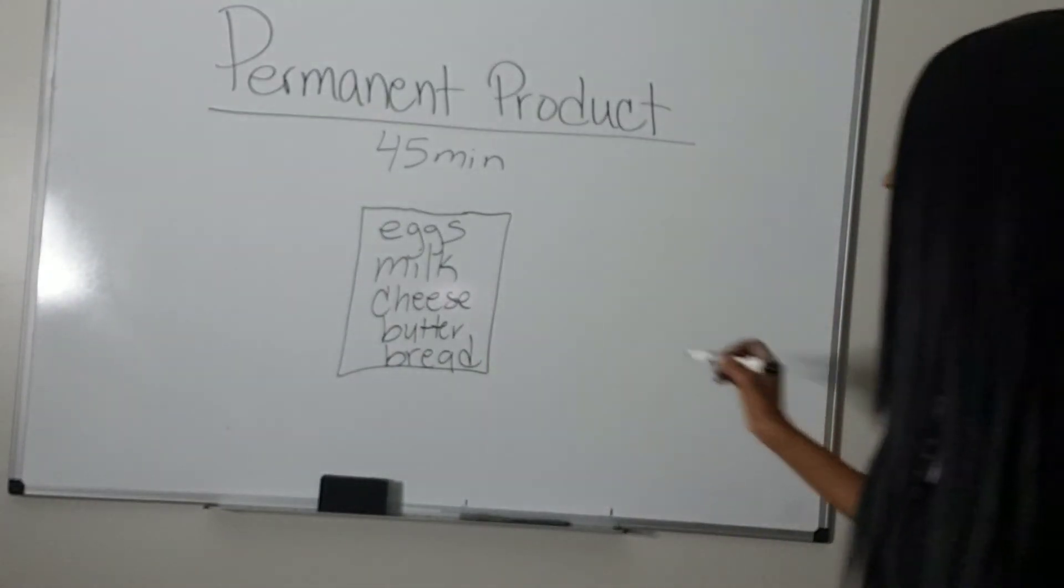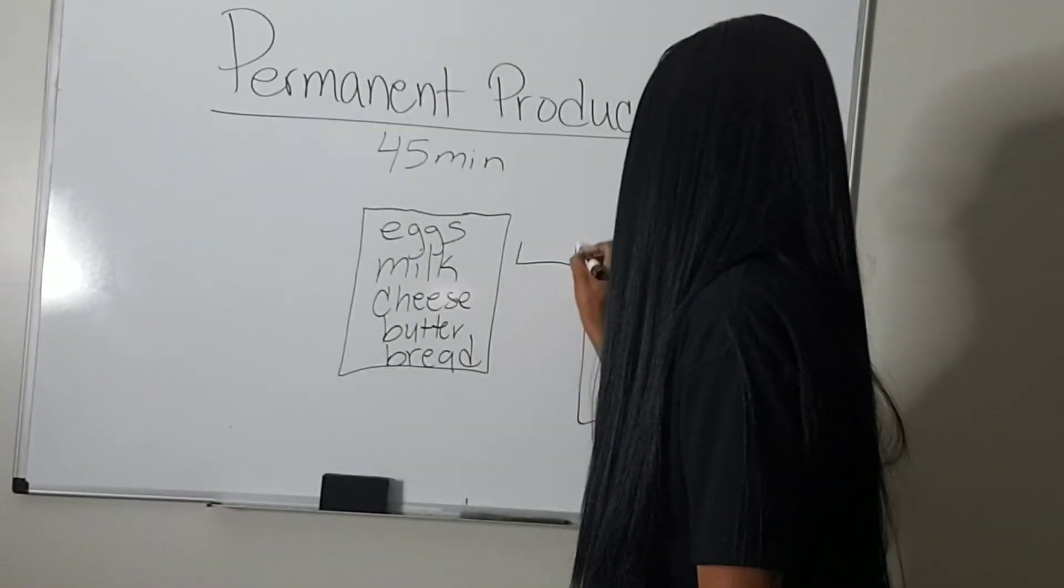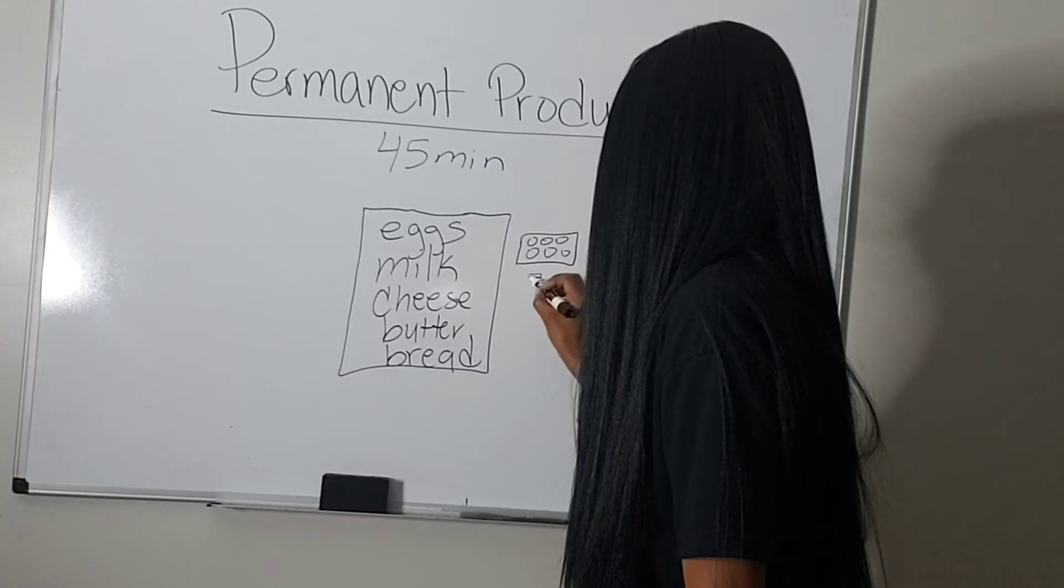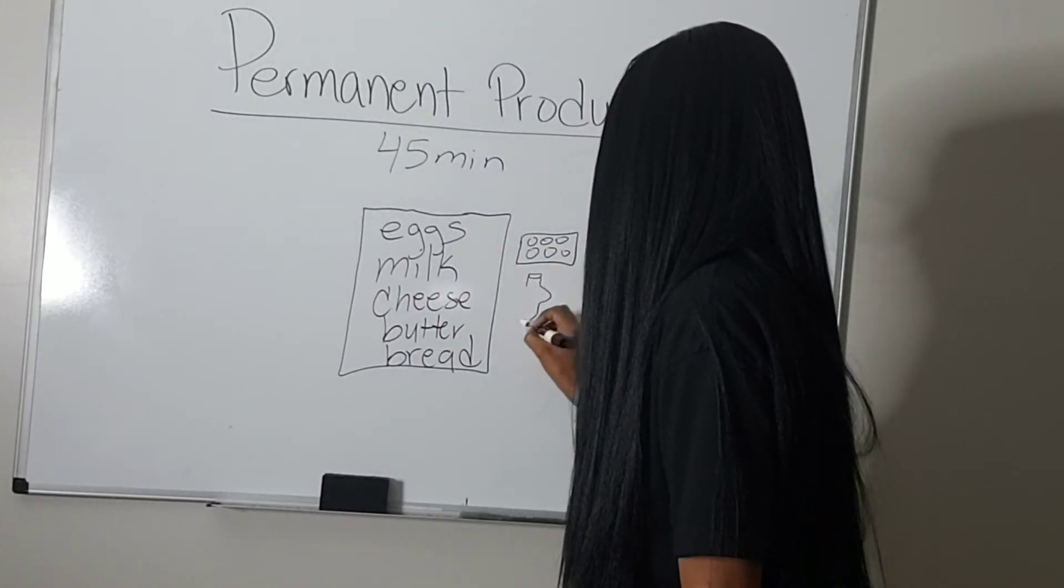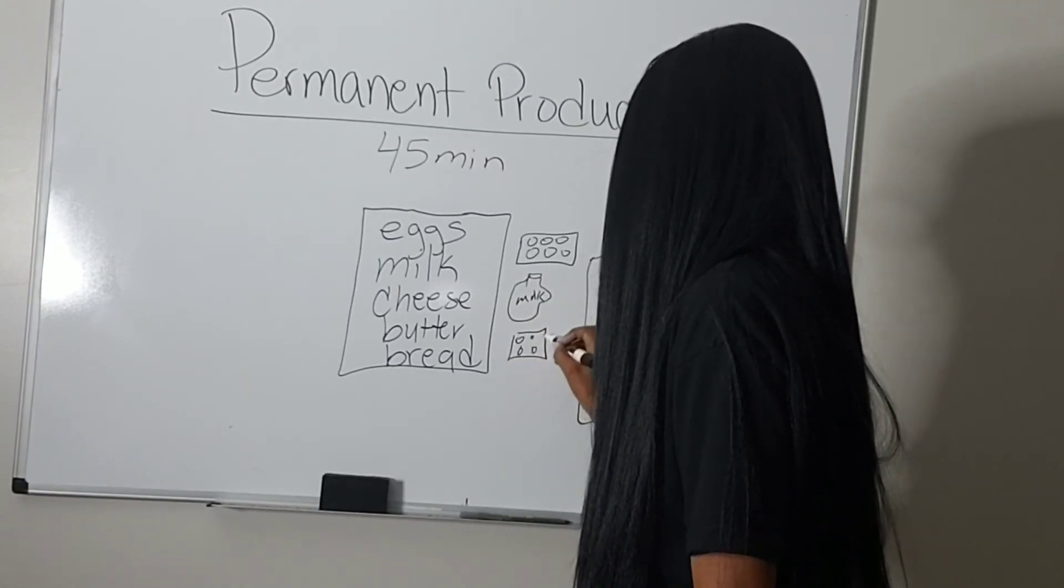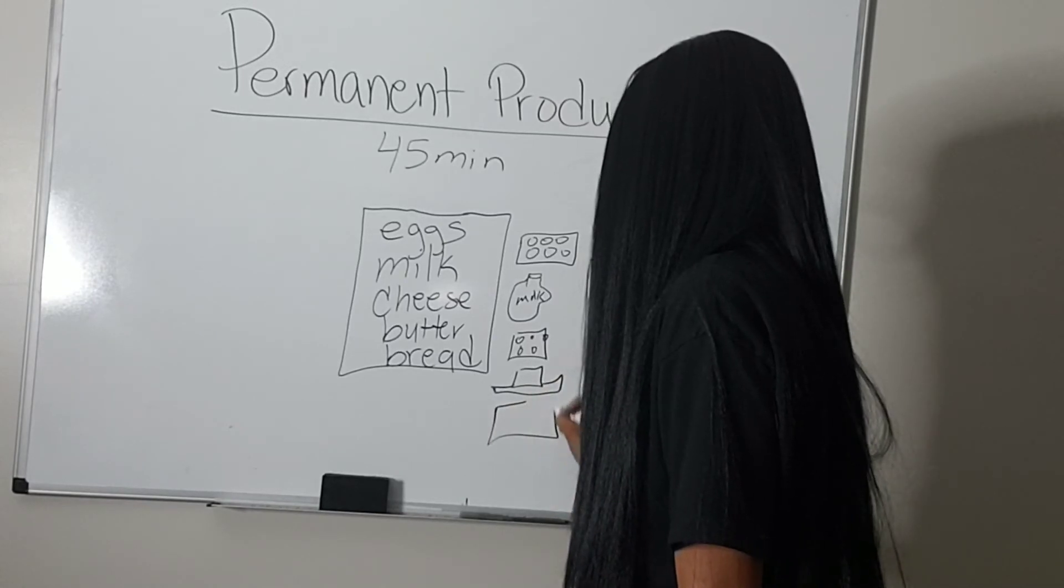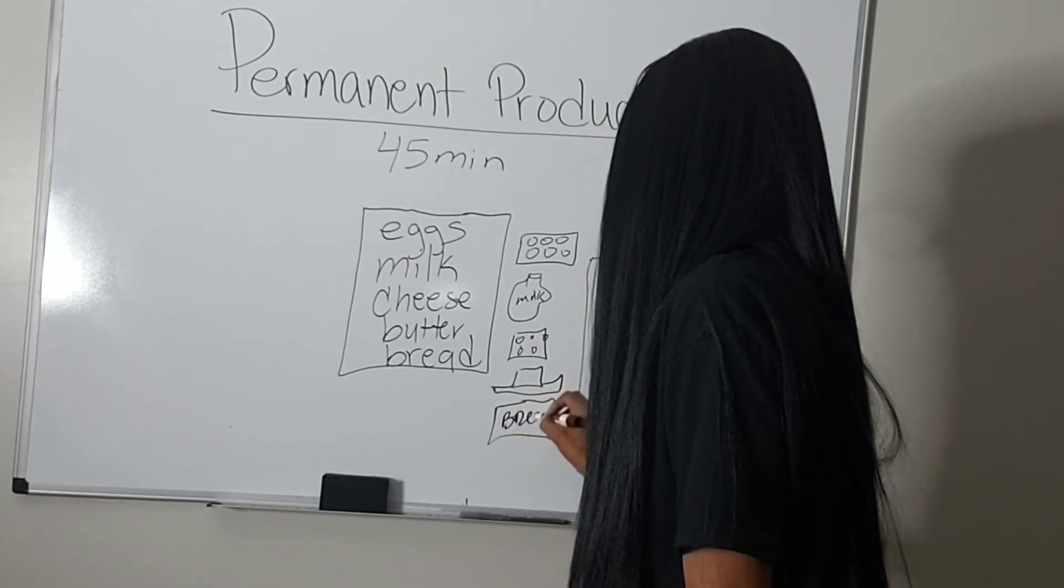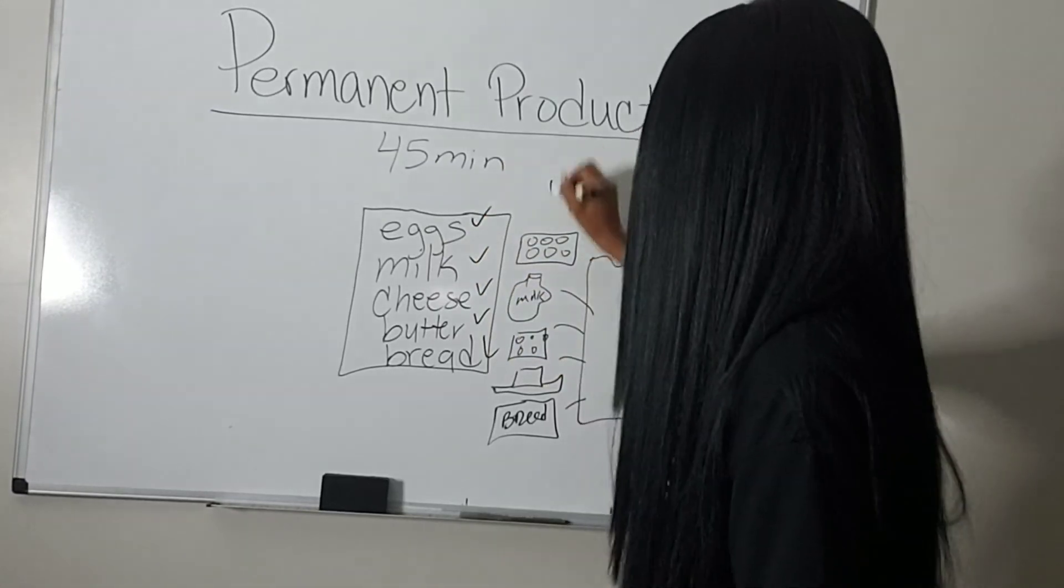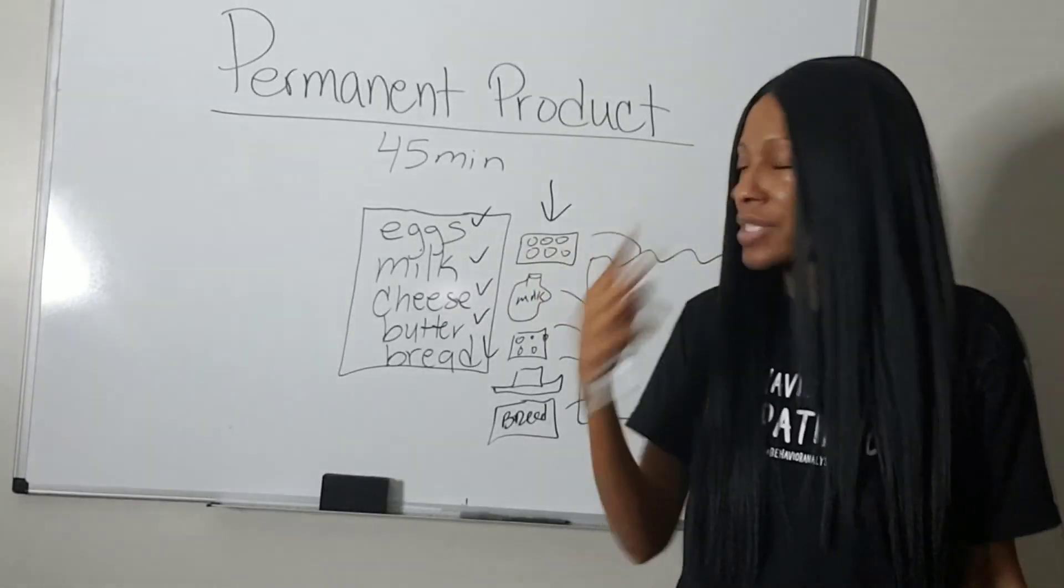Whenever they come back with the grocery set, I can take the actual items - this is milk, this is a tray of butter, and this will be the loaf of bread. I can take the items out of the sack and compare them to the list. Because there's a product, there's something left over, some kind of effect on the environment, then I can come back and visually see that it was done.